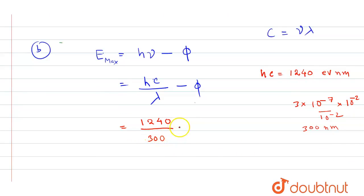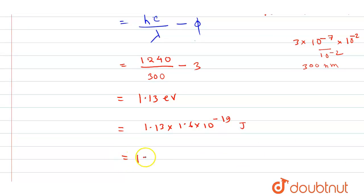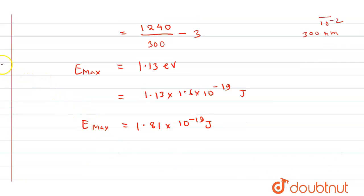Evaluating: 1240/300 = 4.13 eV, minus φ = 3 eV, gives E_max = 1.13 electron volt. Converting to joules: 1.13×1.6×10⁻¹⁹ = 1.81×10⁻¹⁹ joule. So the maximum energy is 1.13 eV or equivalently 1.81×10⁻¹⁹ joule.